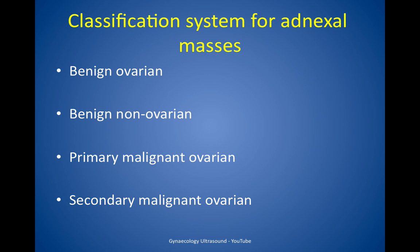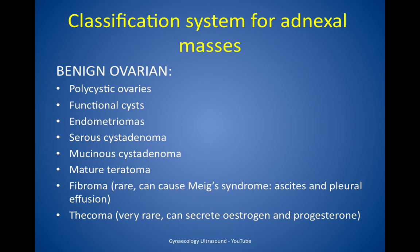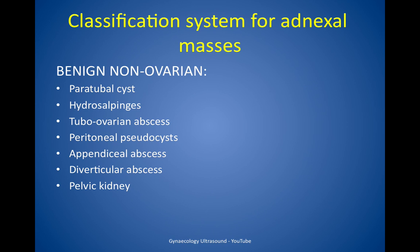The classification system for ovarian pathology covers benign ovarian, benign non-ovarian, primary malignant ovarian and secondary malignant ovarian masses. Among benign ovarian masses we include polycystic ovaries, functional cysts, endometriomas, serous cyst adenoma, mucinous cyst adenoma, mature teratoma, fibroma and thecoma.